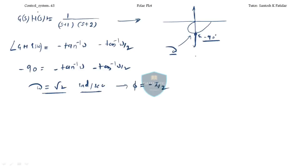In the question they can ask: find out the intersection with the imaginary axis. Where the plot is intersecting the imaginary axis — at that point the angle will be minus 90 degrees. So you have to equate the phase equation of the question with minus 90. At that point you will get Omega, which is the frequency corresponding to minus 90 degrees.